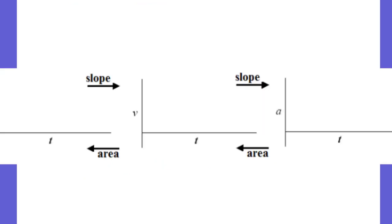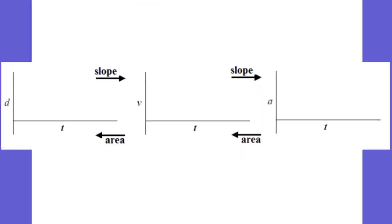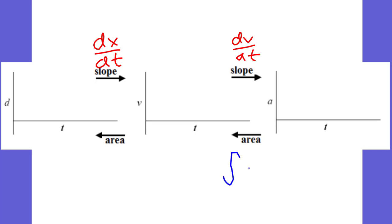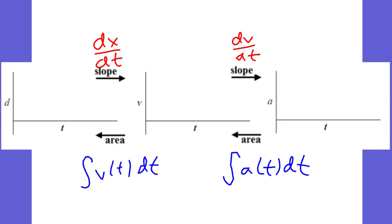To summarize: to go from a position-time graph to a velocity-time graph, we take the slope — dx over dt. To go from velocity-time to acceleration-time, we take dv over dt, the derivative of the velocity. Going the other way: to find velocity from acceleration, we take the integral of the acceleration function with respect to time. To find displacement from velocity, we take the integral of velocity with respect to time.